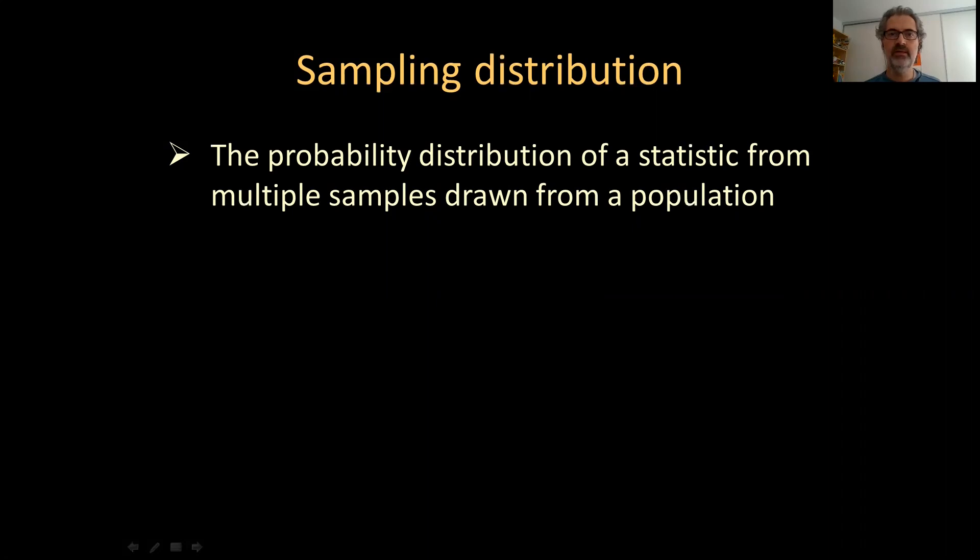This sounds a bit abstract and there is no reason to try and memorize it, but it's very important to try and understand it. Sampling distributions are a crucial concept for appreciating the importance of statistics. It's essentially what inferential statistics are all about. So I'm going to try and illustrate what sampling distributions are through some graphical examples.